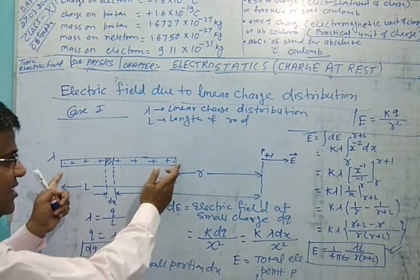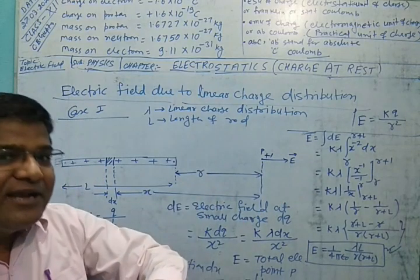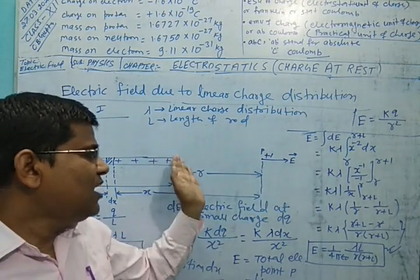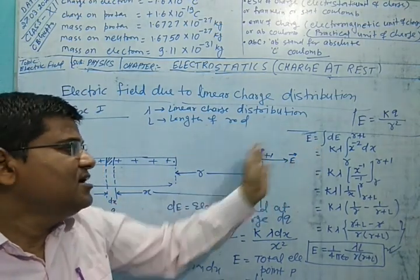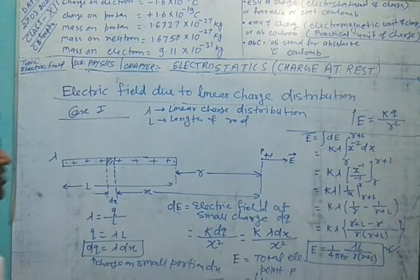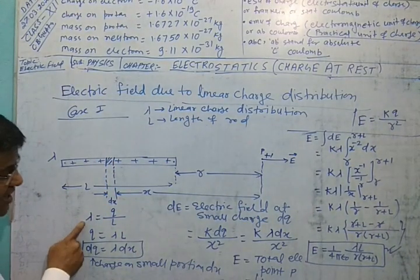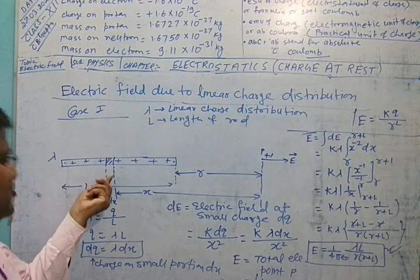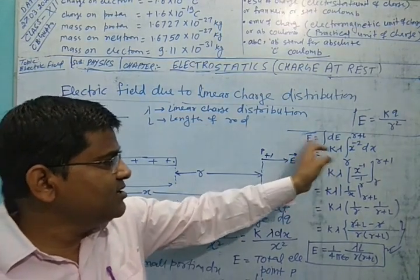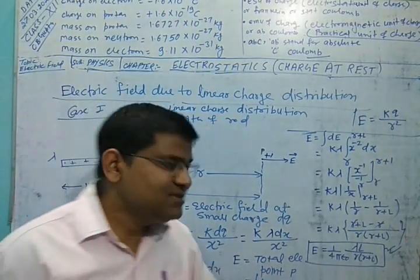To summarize: consider a charged rod. To find the electric field at a particular point, place a unit positive charge there and apply Coulomb's law to determine the direction of the electric field, which acts along the Coulombic force. Lambda is the linear charge distribution Q by L. Consider a small portion DX, find DE for that small portion, then integrate DE to get E equals 1 over 4pi epsilon-naught times lambda L divided by R(R plus L).